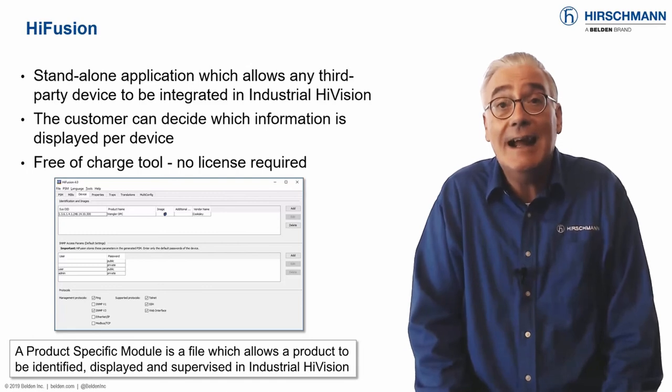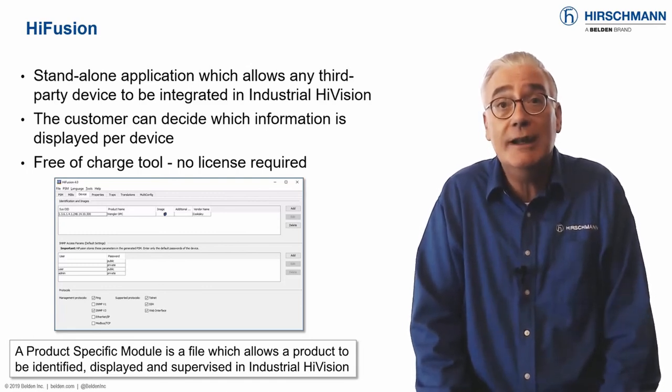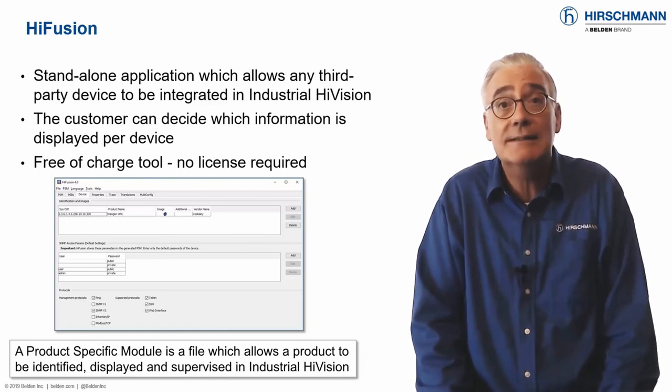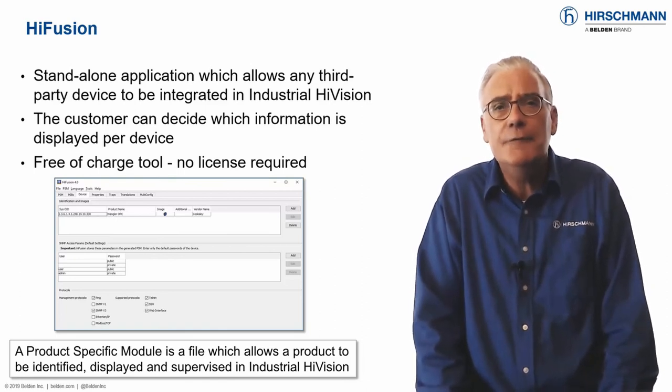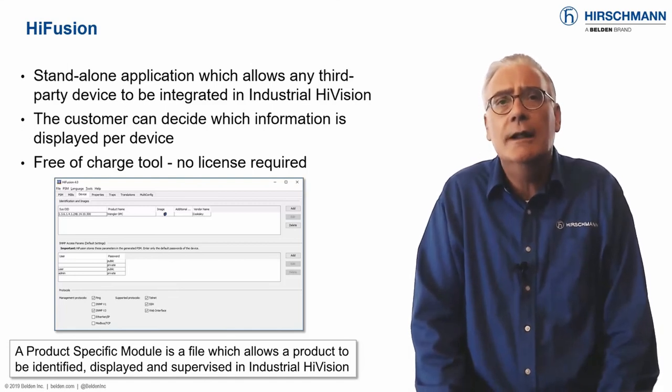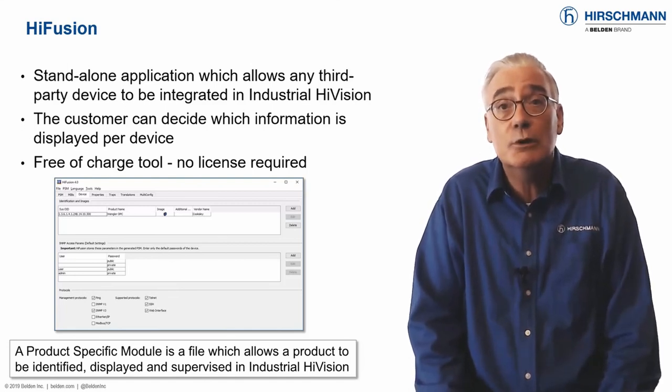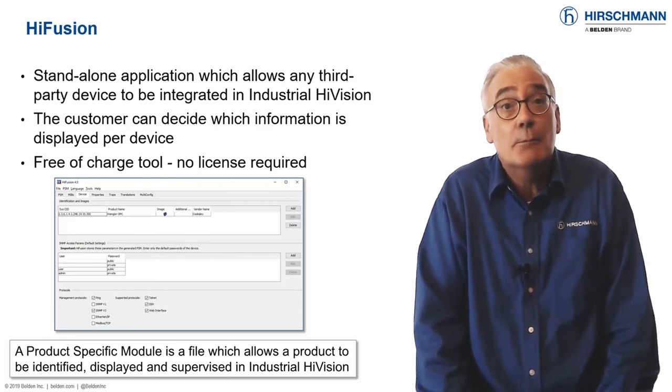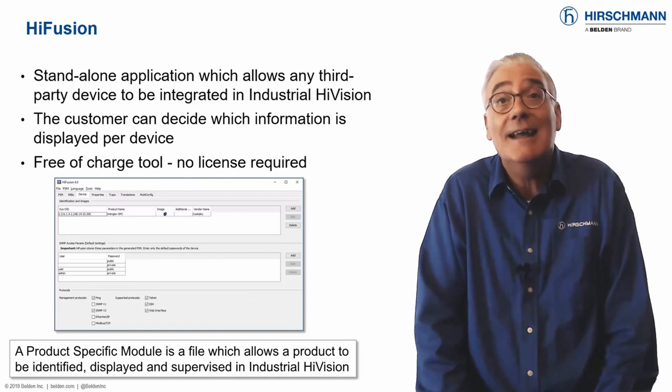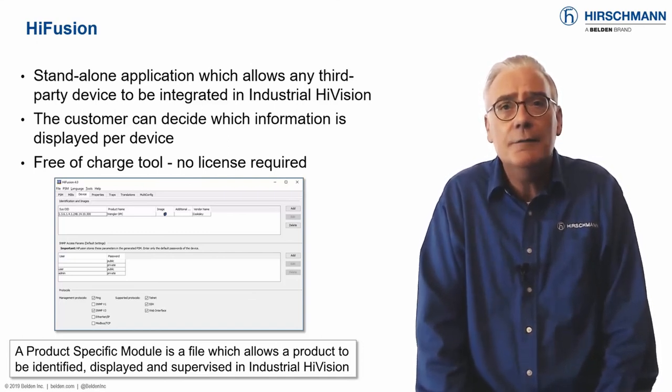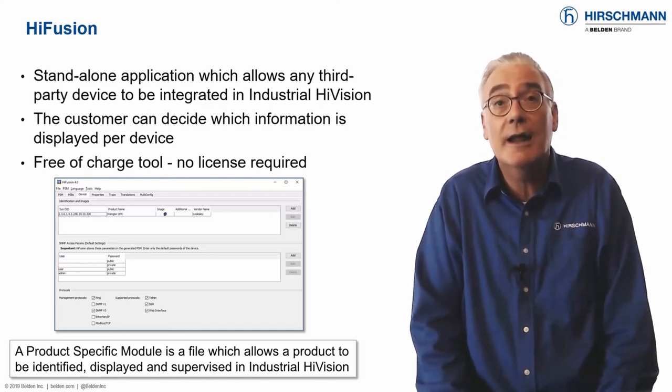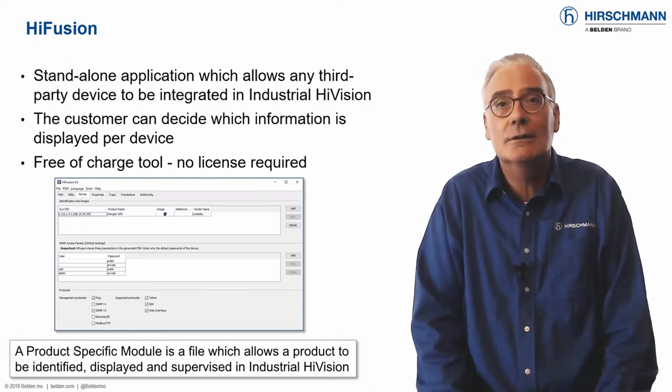HiFusion is a stand-alone application which can generate the code required to configure and supervise a third-party device. If you have no SNMP knowledge, the HiFusion wizard will generate basic supervision code. If you are an SNMP expert, the sky is the limit for supervision and configuration code. HiFusion includes a test environment, so you do not need to touch your live installation.